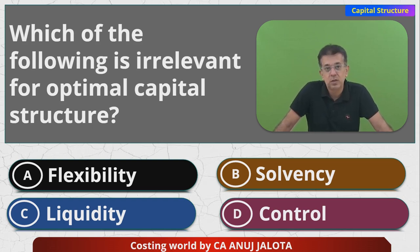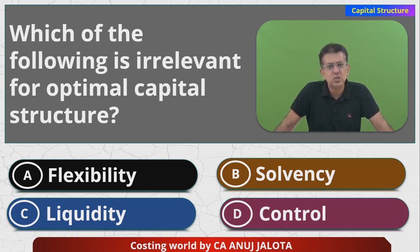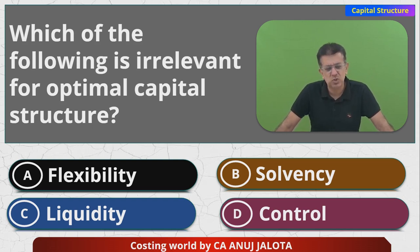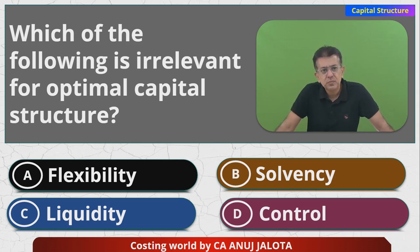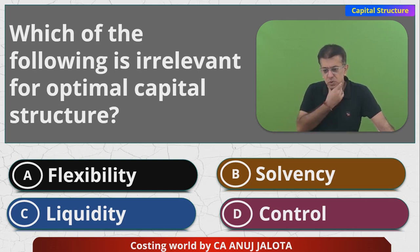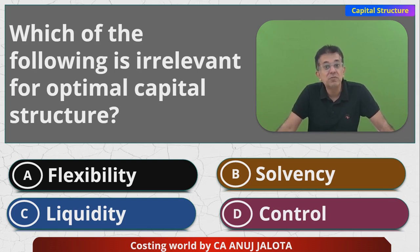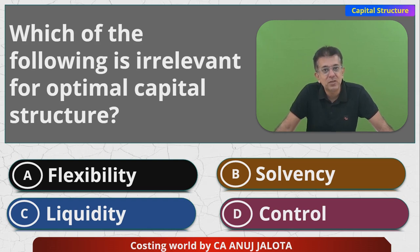Solvency means the company has a danger of becoming bankrupt — something we don't think much about, but I'll come back to it. Liquidity means you should try to have a capital structure which takes care of your liquidity. For example, if your sales are less — which usually happens in the first two or three years — and you take more debt, you'll have to repay debt each and every year with interest, so debt might become a problem.